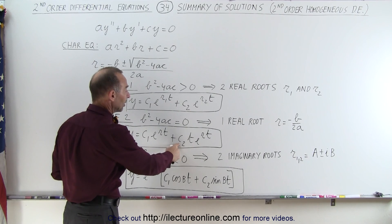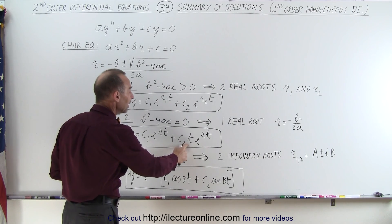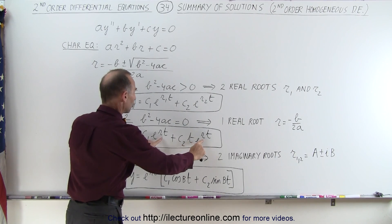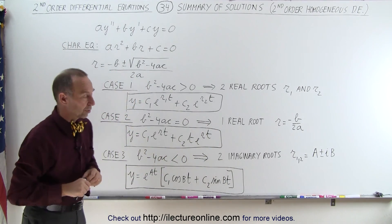So the second term is plus another constant c₂ times t times e^(rt). Of course, r has to be the same number since there's only one single root.